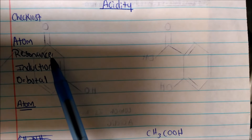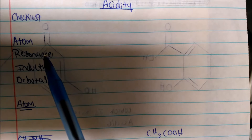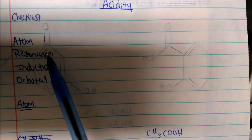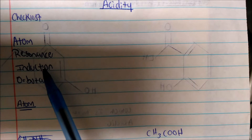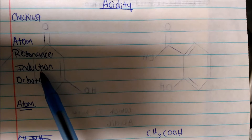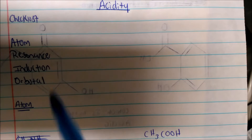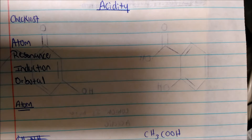You want to look at resonance — drawing the conjugate base, can it participate in resonance? Then induction, which is a little bit more tricky, but we're going to review. And lastly, orbital, which we'll review a little bit.